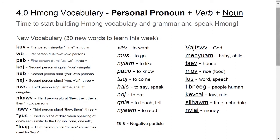Something very interesting that Hmong does with personal pronouns is: in English we just have me or I, you (one of you, two of you, all of you) — it doesn't really matter, we just have 'you,' 'us,' and 'them.' But Hmong breaks it down into something a bit more specific. There's either one of you/me, two of you/me, or three or more of you/us.